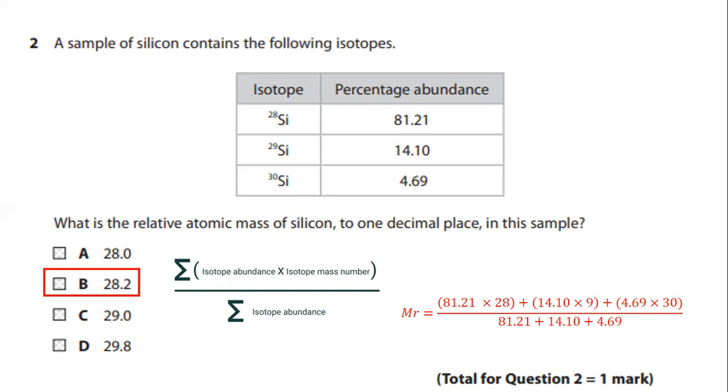Since there is an abundance of other isotopes, we cannot take the value 28. So the answer should be 28.2.